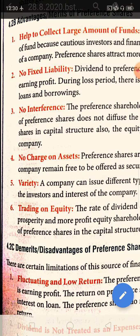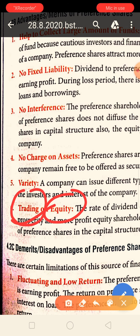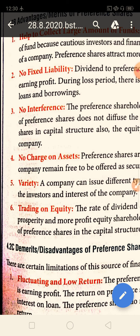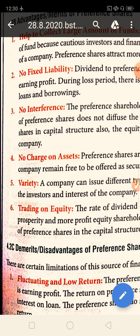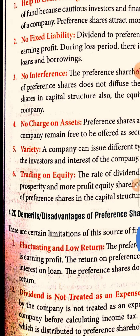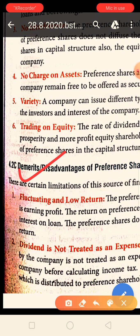The next advantage is trading on equity. If a business earns maximum profit, then definitely the equity shareholders will get maximum profit. With the presence of preference shares, preference shareholders are conscious investors. When the company has a lot of money, equity shareholders also benefit additionally, increasing overall goodwill.